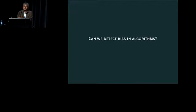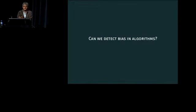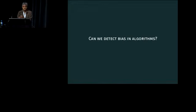Which brings us to the topic of this talk: can we detect bias in algorithms? And first of all, what does this even mean? For the purpose of this paper, we're going to look at a very specific set of notions of bias. The whole topic of fairness, and conversely bias in algorithms, is a very rich and interesting area. But I will try to narrow down to a specific topic relating to U.S. law that is of interest here.